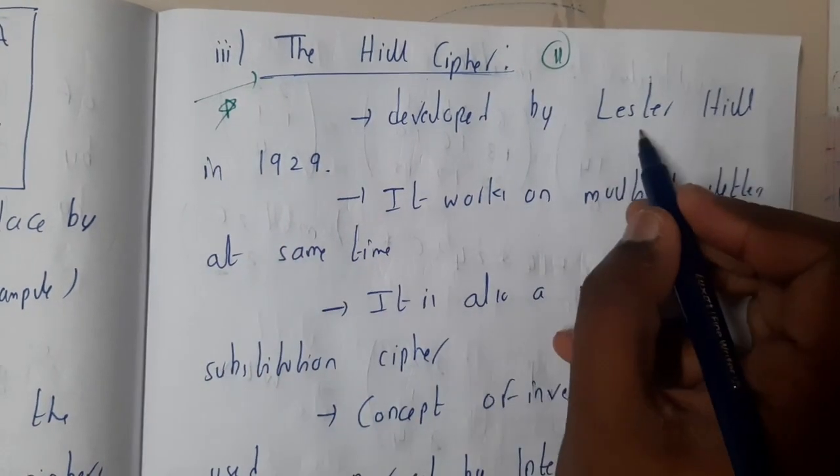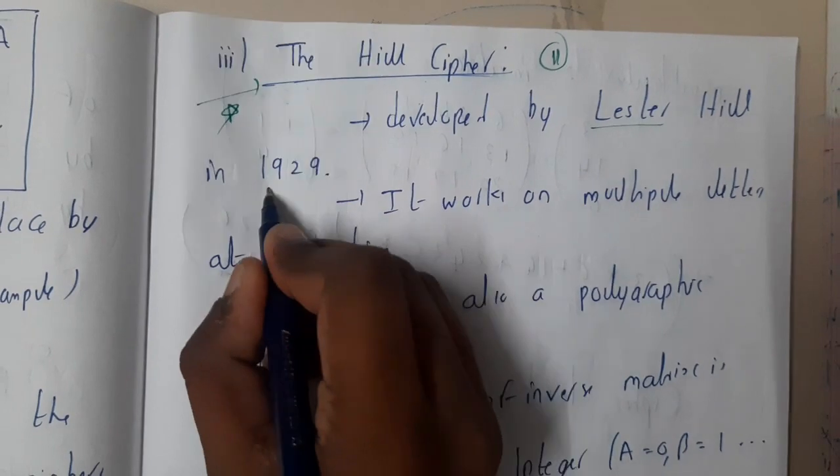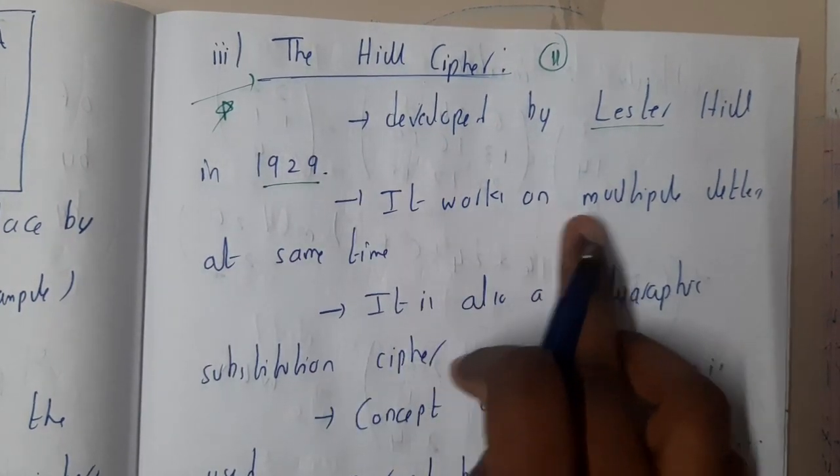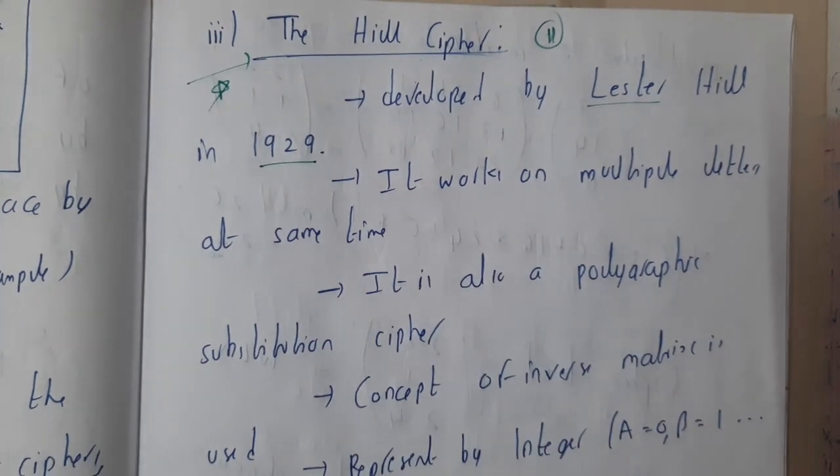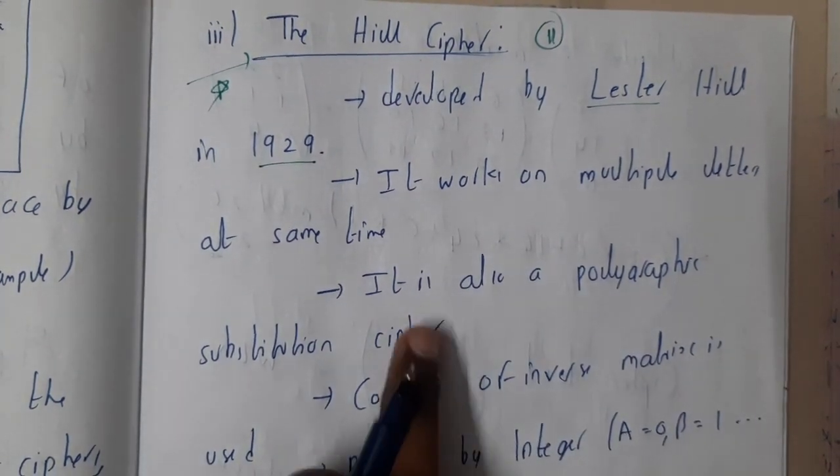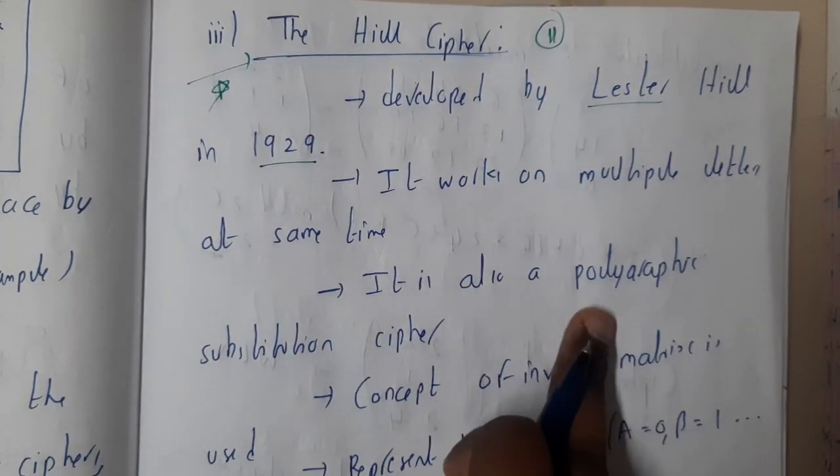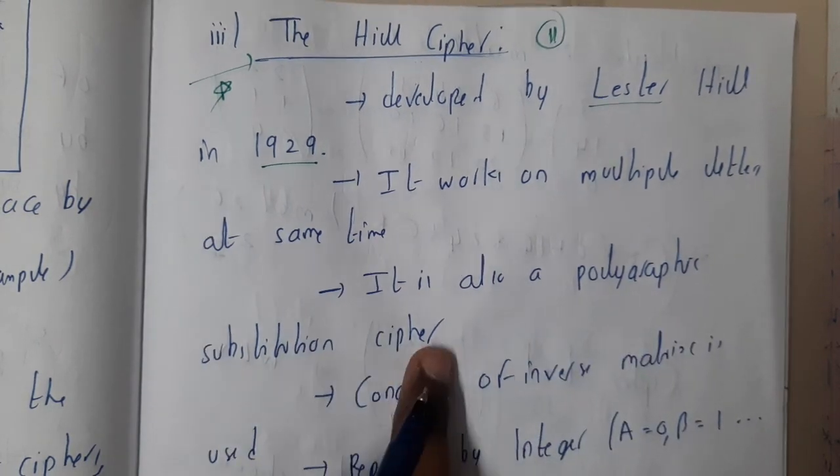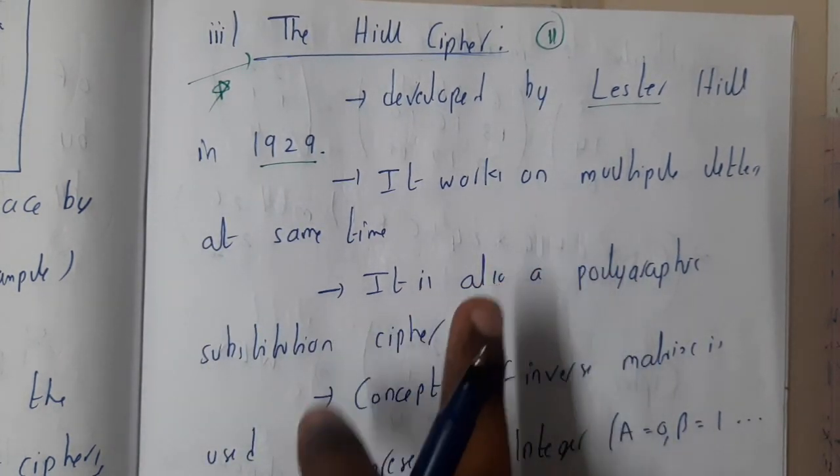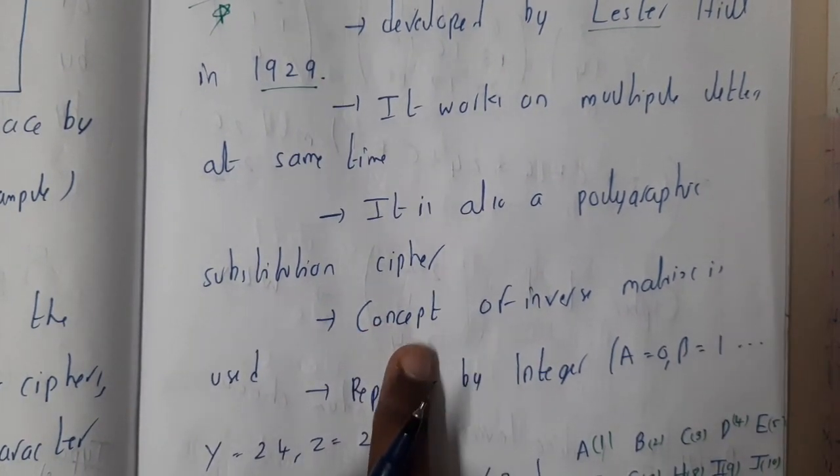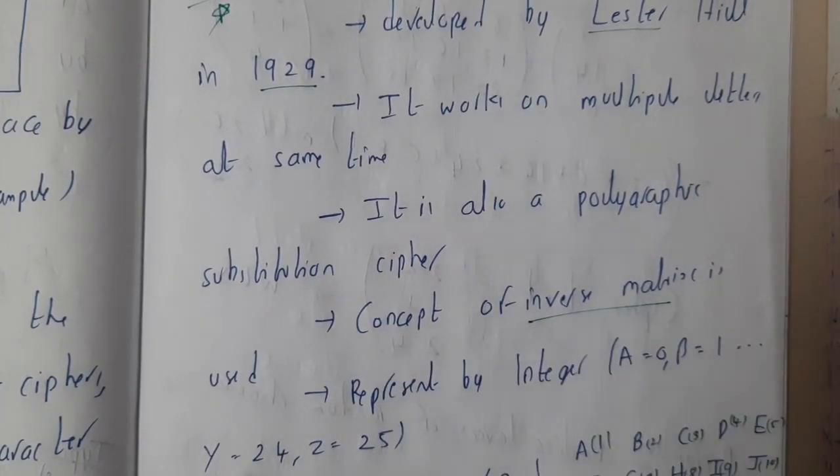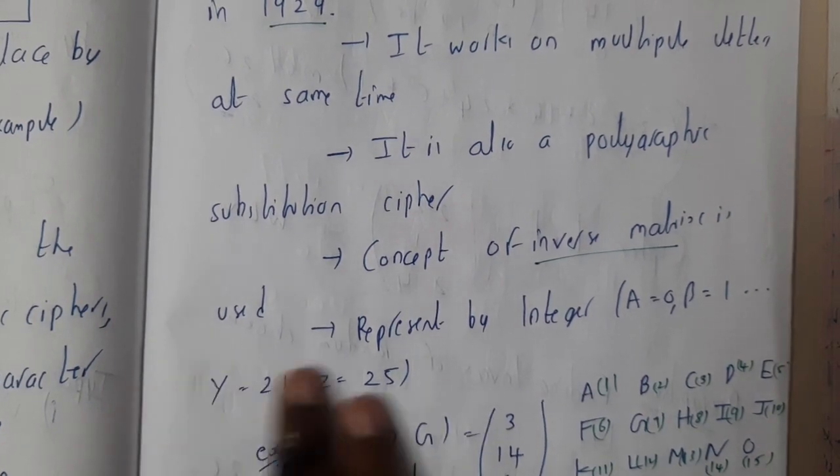It was developed by Lester Hill in 1929. It works on multiple letters at a time. Once we go through an example, you will have a clear idea. It is also a polygraphic substitution cipher, so there could be a chance that you are having multiple letters. We will be using the concept of inverse matrix.